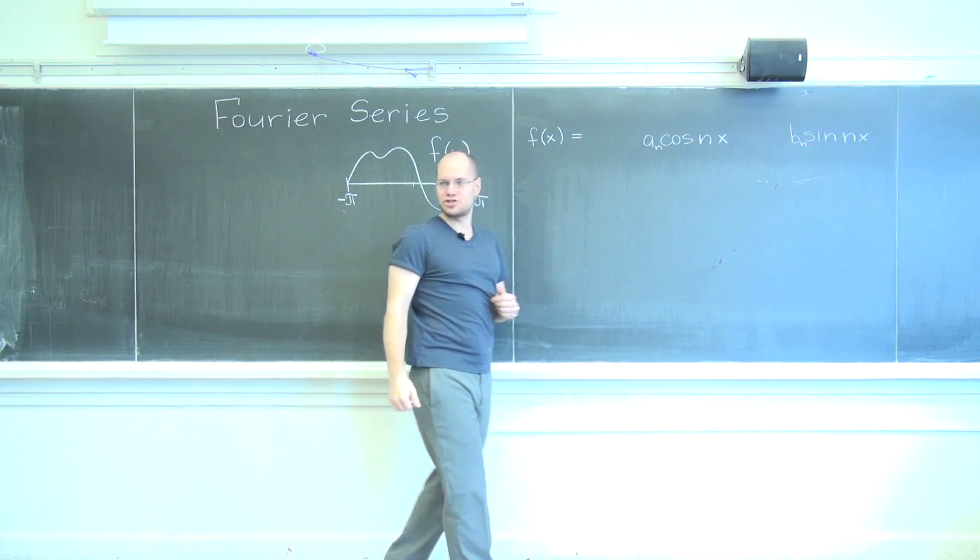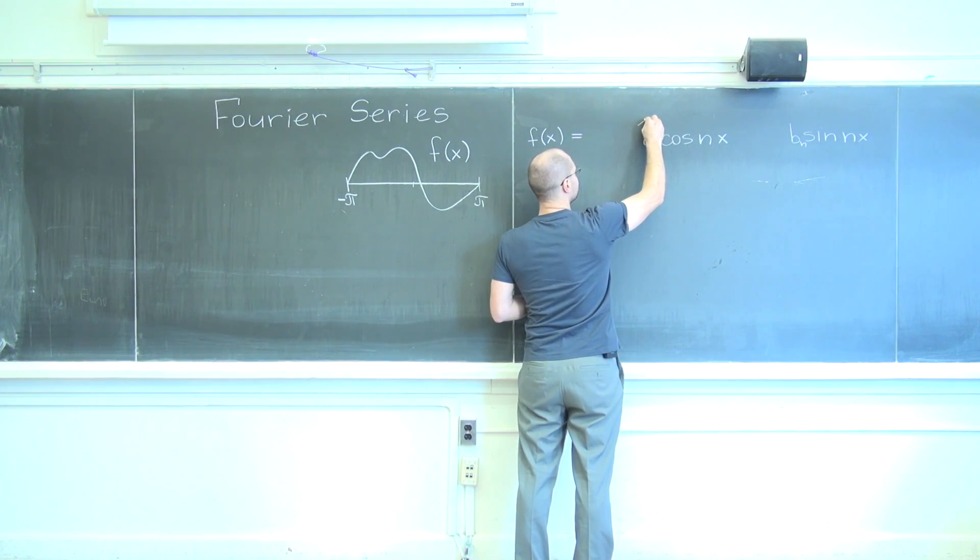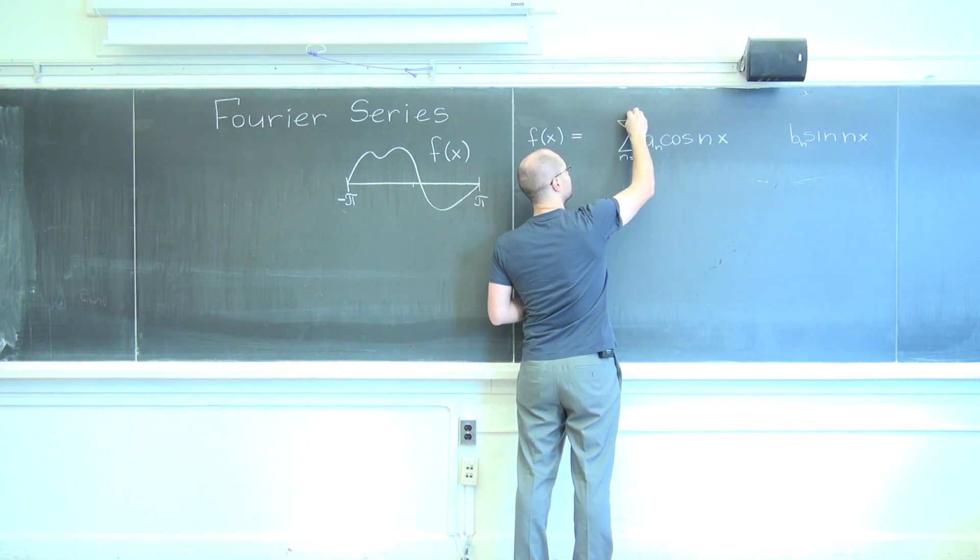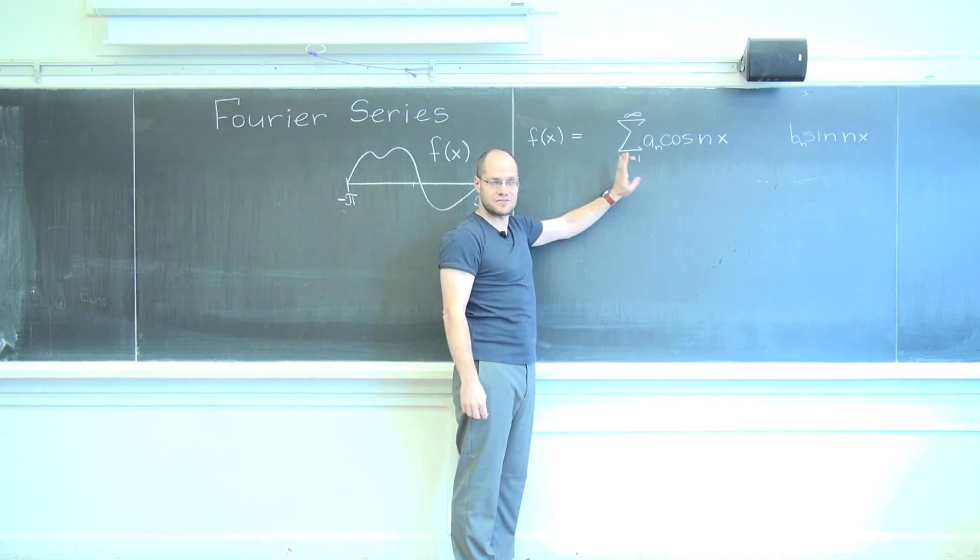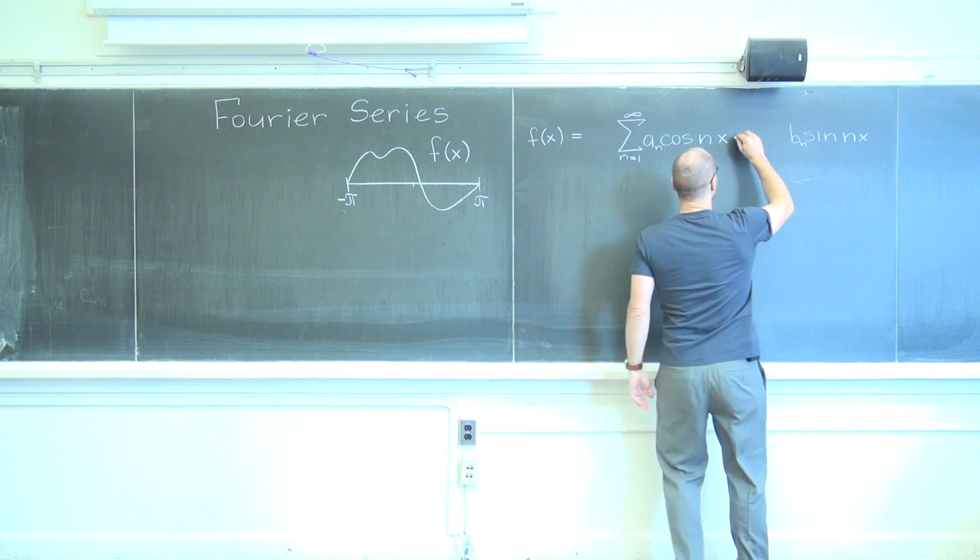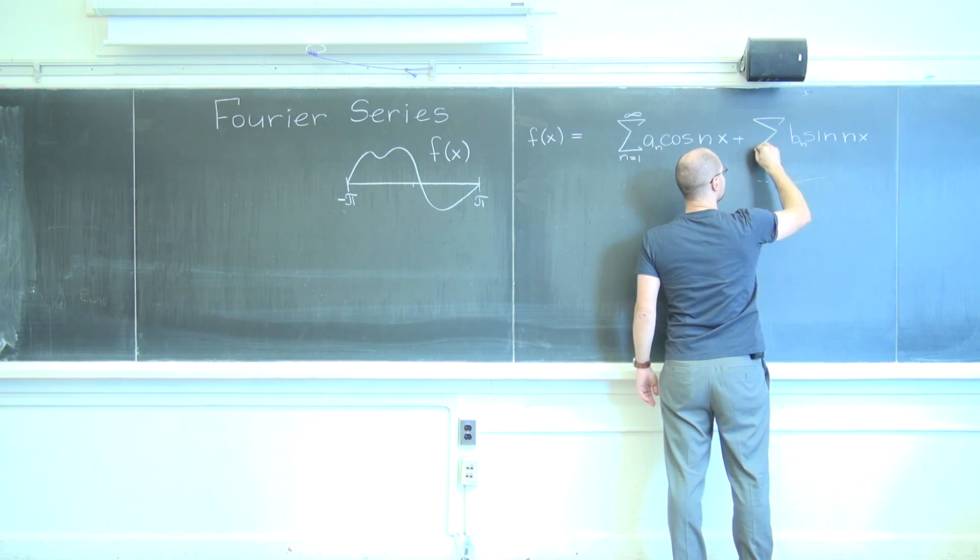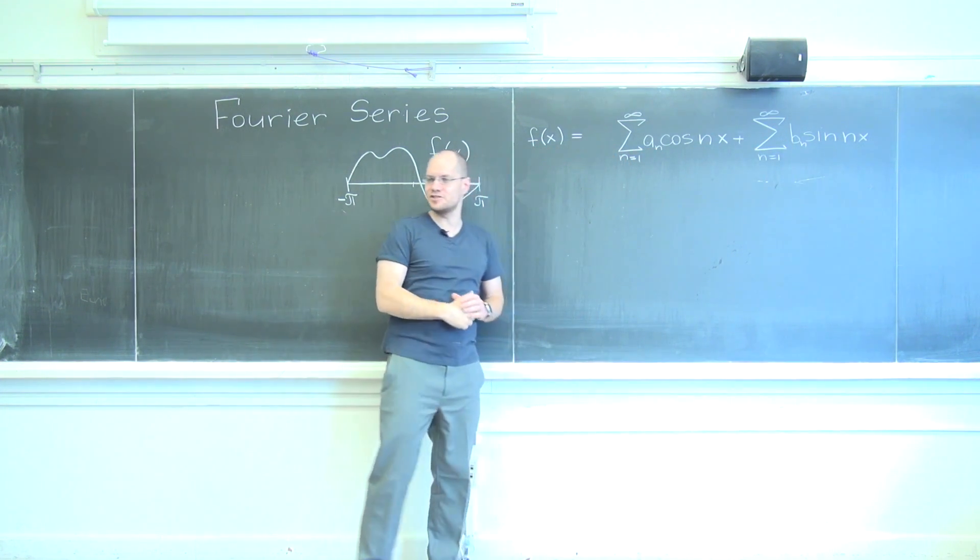And so the question is, how do you determine these coefficients? We'll sum them all together from n, from 1 to infinity. 1 is important, not 0, I'll have to make up for that. Plus, and then we'll have another sum, sines and cosines, two sums. This is the kind of series we're looking for.